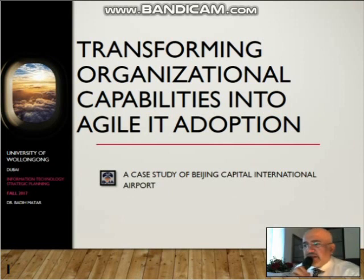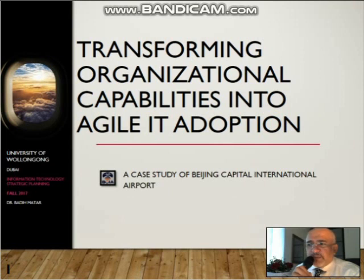The selected case study is essentially about transforming organizational capabilities into agile IT adoption in Beijing's Capital International Airport. The method of analysis used in the reviewed case study includes qualitative research method, where we shed light on how dynamic capabilities applied through transformation agents across different IT systems implementation that enabled organizational agility.